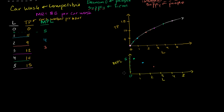So the MPL values are five, four, three, two, one — decreasing by one each time we add a person. This means the marginal product of labor is actually a straight line. Every time we moved up one unit of labor, we moved down one on MPL. So this is essentially plotting the slope of the total product curve at any given point, and it forms a straight downward-sloping line.